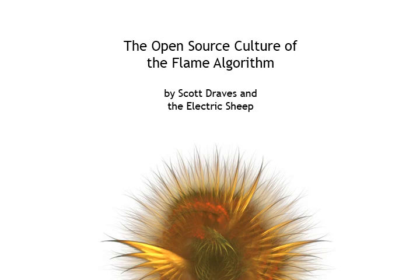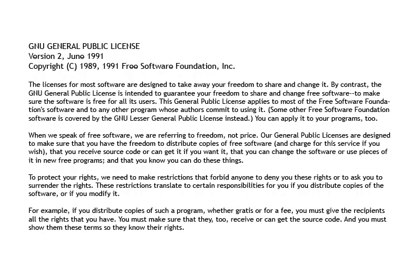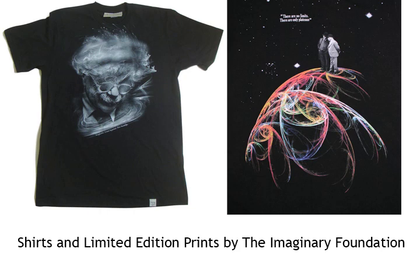In 1993, when the World Wide Web was new, Scott Draves released the Flame Algorithm as open source. This was, quite possibly, the earliest application of the GPL to art. Since then, his code has been copied, expanded, and is still thriving. Every day, people all over the world create flames with no intervention or permission from Draves.